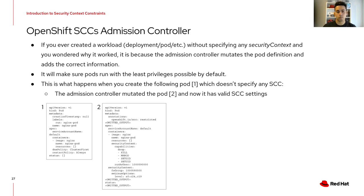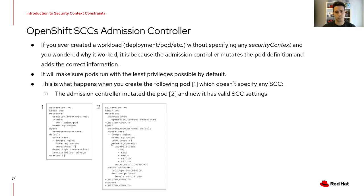Have you ever created a workload like a deployment or pod without specifying any security context, and wondered why it worked? That's because the mutating admission controller mutates the pod definition with the correct information. The SCC admission controller ensures pods run with the least privileges possible by default. In the example shown, figure one is what we sent to the API server — with no security context specified — and figure two is what got persisted to etcd, with security context information added by default by the mutating admission controller.